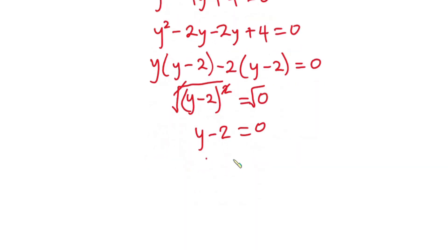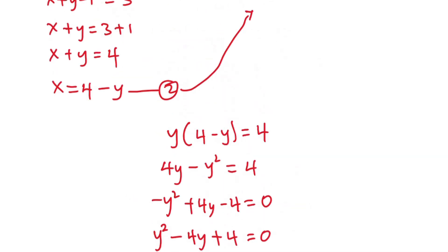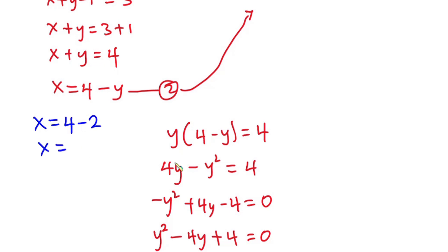This implies that y is equal to 2. Now let's substitute y into equation 2. If y is equal to 2, then x is equal to 4 minus 2, and 4 minus 2 is equal to 2.